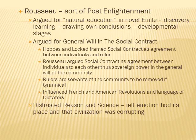Rousseau is often lumped in with the Enlightenment but is quite different from the others — some call him a romanticist or post-Enlightenment. He argued for natural education in his novel Emile, believed in discovery learning, and argued there were developmental stages and that not everybody develops at the same rate. He argued for the general will in the social contract. Where Hobbes and Locke framed the social contract as an agreement between individuals and rulers, Rousseau argued it was an agreement between individuals to each other — the community was the sovereign power. Rulers were servants of that community and could be removed if tyrannical. He influenced the French and American revolutions, and even the language of later dictators who claimed to act based on the general will of the people.